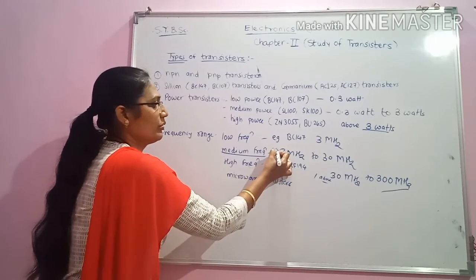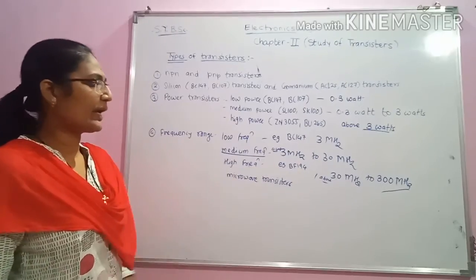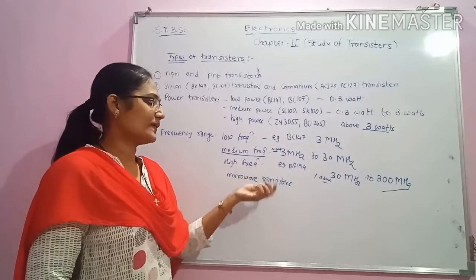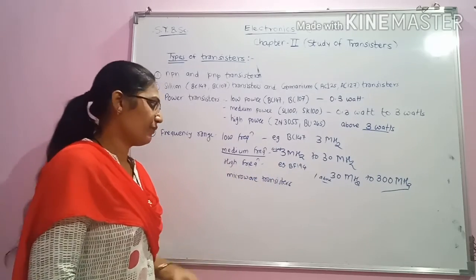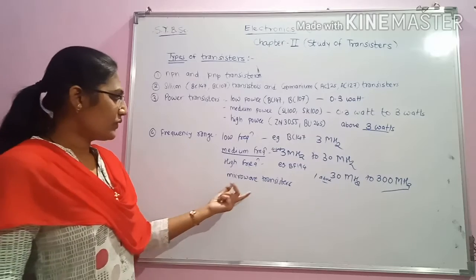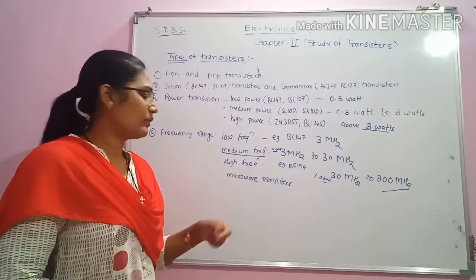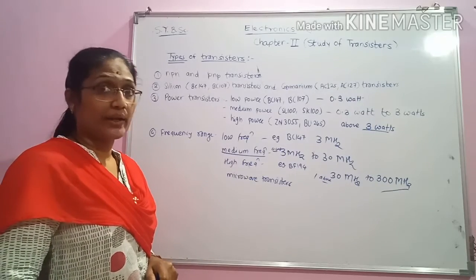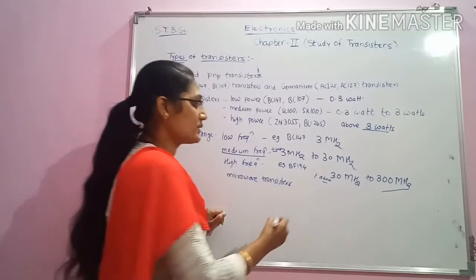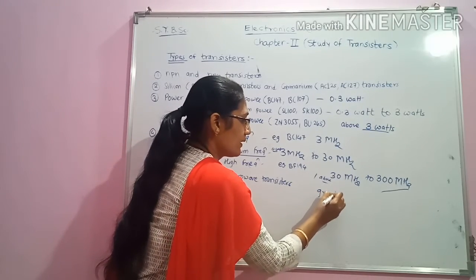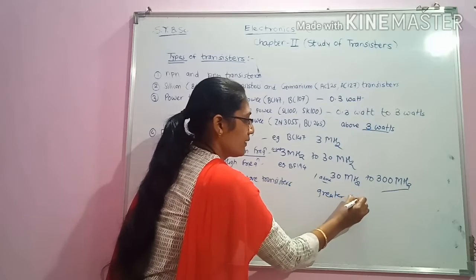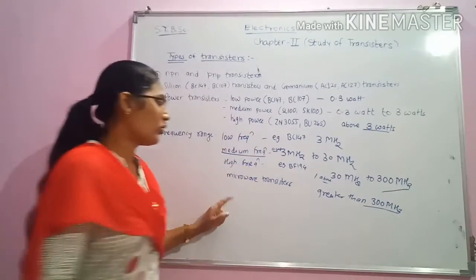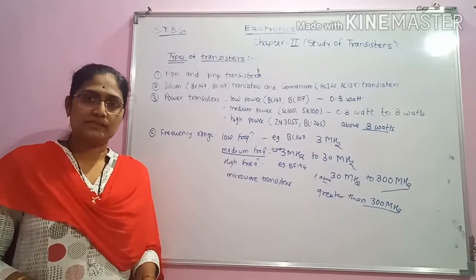An example of high frequency transistors is BF194. Microwave transistors are the transistors which operate in the microwave region and their frequencies are greater than 300 megahertz. They are called microwave transistors.